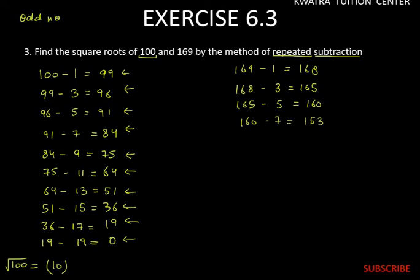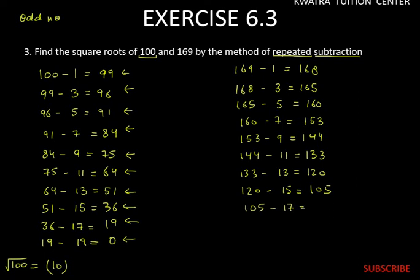153 subtract 9, it will be 144. 144 subtract 11, it will be 133. 133 subtract 13, it will be 120. 120 subtract 15 gives 105. 105 subtract 17, so it will be 88.